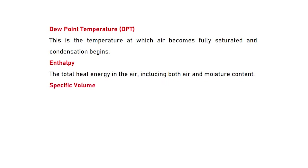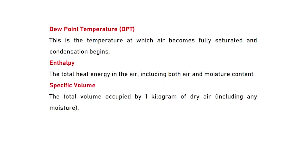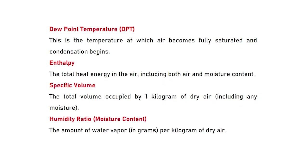Enthalpy is the total heat energy in the air, including both the air and moisture content. Specific volume tells us the total volume occupied by one kilogram of dry air, including any moisture. Finally, humidity ratio gives the amount of water vapor in grams per kilogram of dry air.